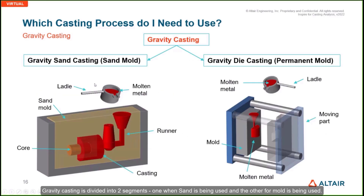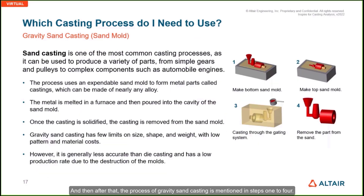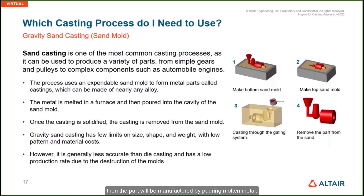Gravity casting is divided into two segments: one where sand is used and the other where a mold is used. The process of gravity sand casting is mentioned in steps 1 to 4, showing how the bottom half and top half of the mold are prepared. Once the cavity is created with the combination of the top and bottom half, the part is manufactured by pouring molten metal.